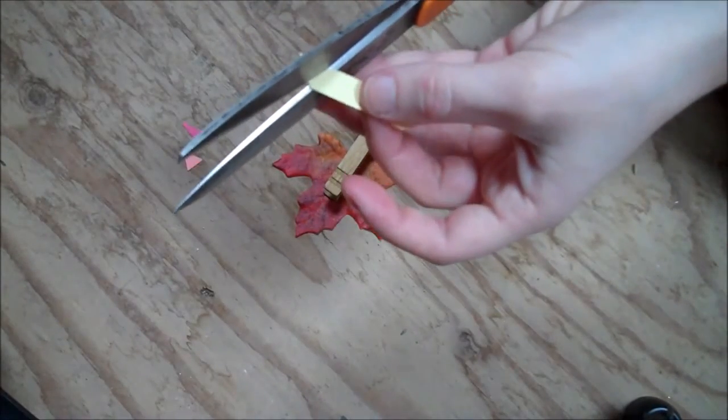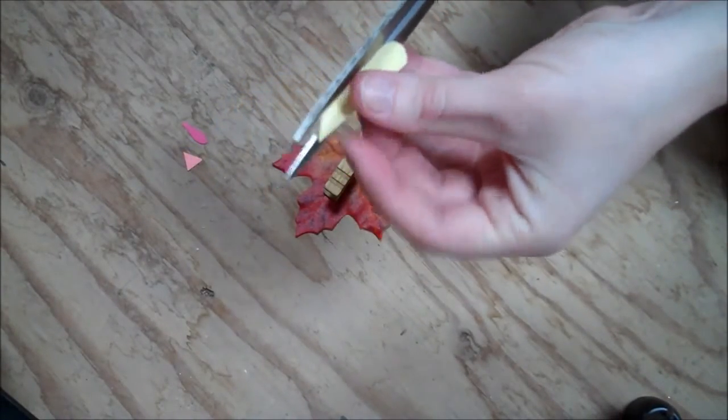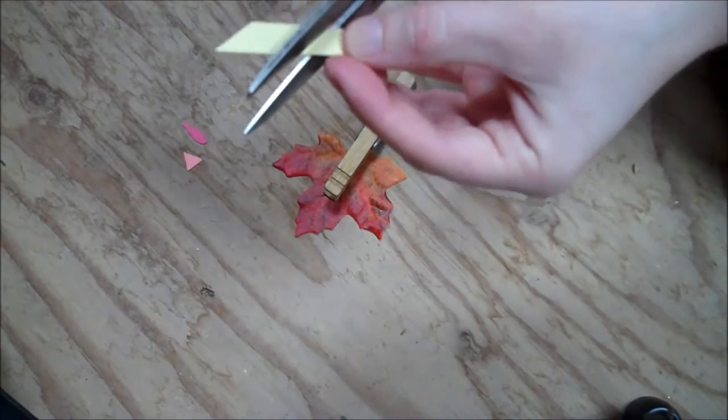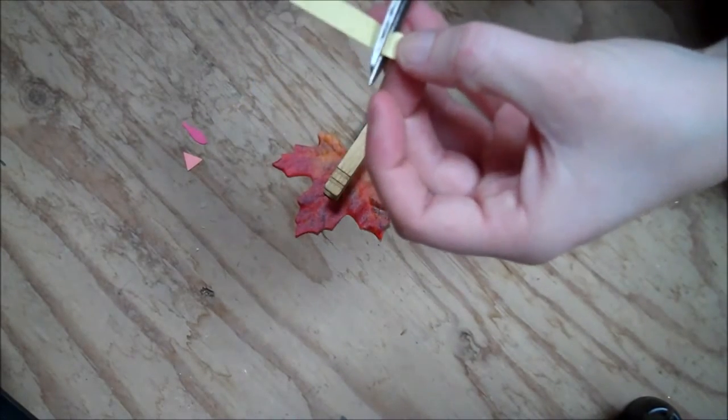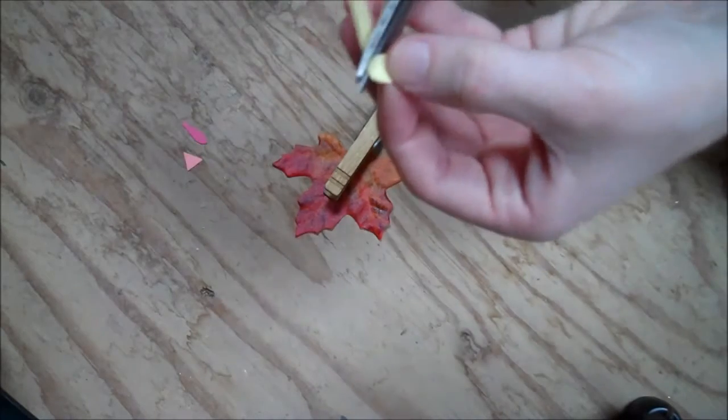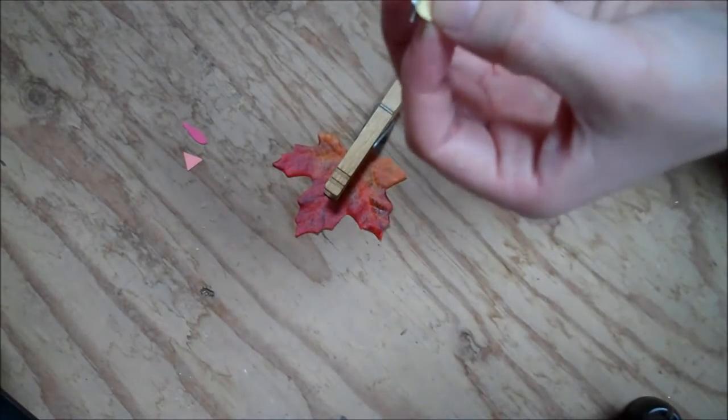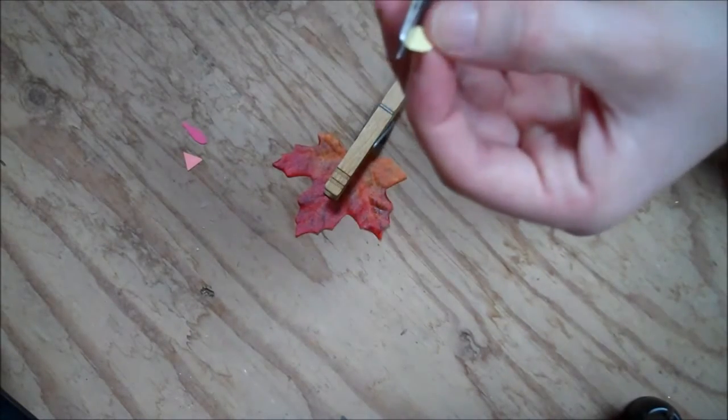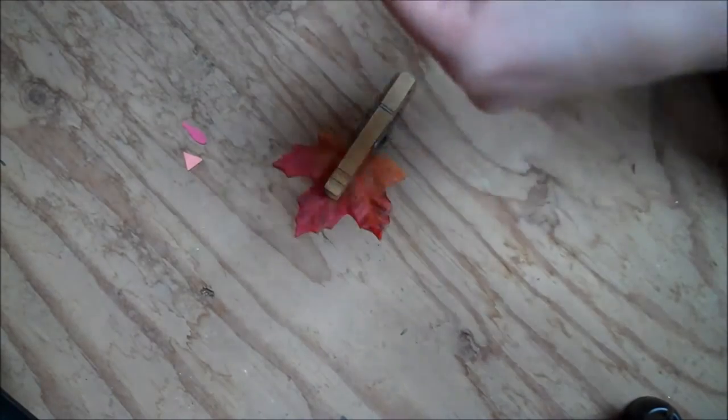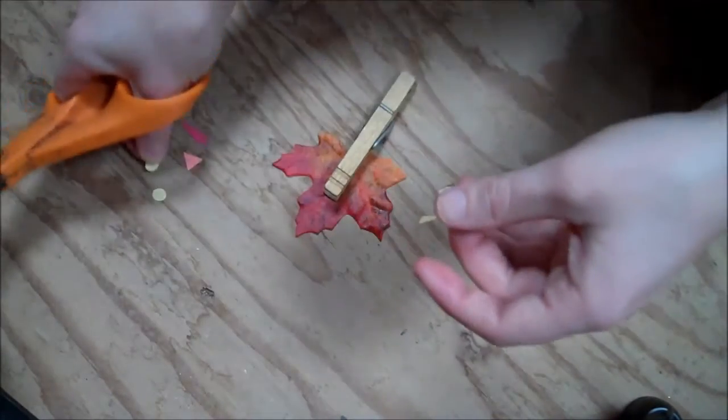Then just take some white or some yellow. You want to cut out some very tiny little circles. You want to cut two of those. You use those as the turkey's eyes.